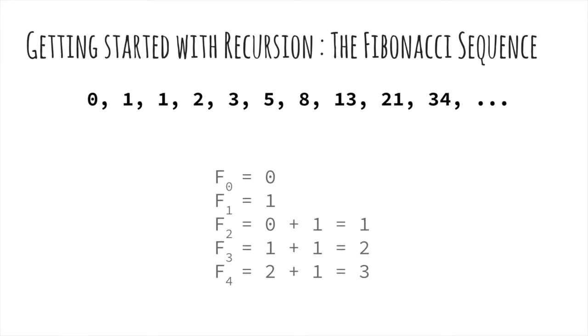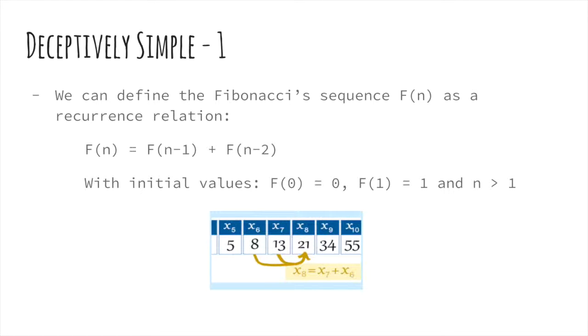Fibonacci's original sequence begins with F1 = 1, while in modern mathematics the sequence starts with 0. But this has no effect on the other members of the sequence. Let's visualize the sequence in terms of recursion. We can represent the Fibonacci sequence in the form of a recurrence relation. In recurrence relations, each further term is defined as a function of the preceding terms.